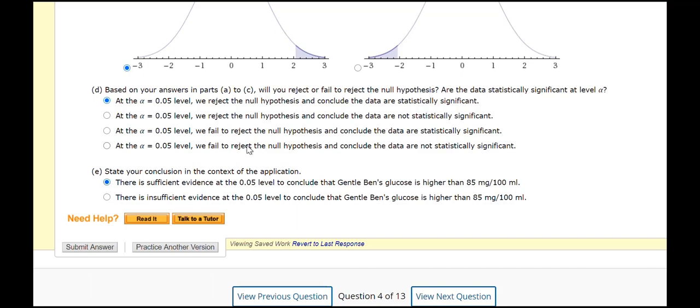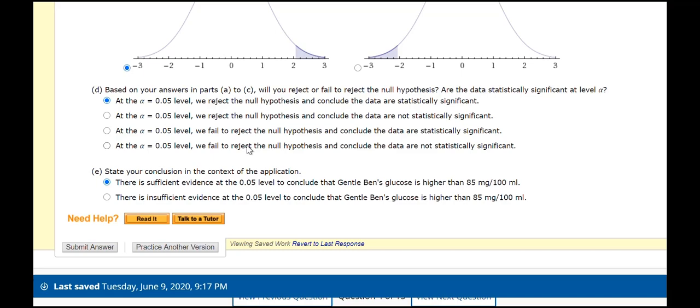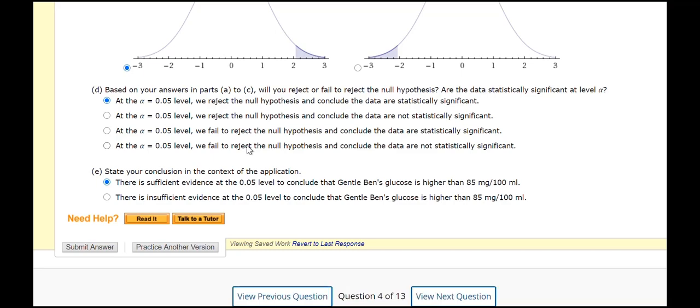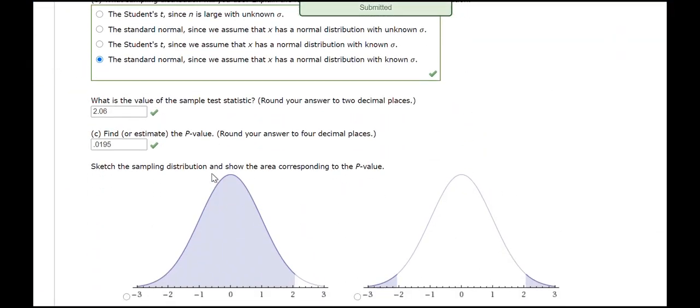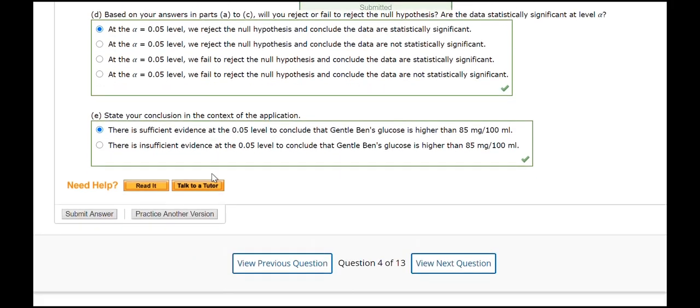So, that's what we're saying. So, our conclusion is there is sufficient evidence at the 0.05 level to conclude that the glucose level is higher than 85. So, I'm going to put that. So, remember, when you're doing a statistical test, you have one of two outcomes. It's either we reject the null hypothesis and say that there is statistical significance. We reject and say there's statistical significance. That's one option. The other option is we fail to reject and we don't know anything. All right. So, let me submit the answer and see how we did. And, it looks like I got all of them correct.